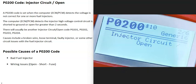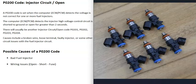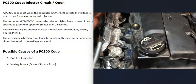Today I'm talking about a P0200 code — what it is and how you can go about fixing it. A P0200 code is an injector circuit open. Basically, each cylinder on the engine has a fuel injector controlled by the computer to inject fuel, but when you get this P0200 code the computer is seeing some kind of problem inside the injector circuit, which is the wires the computer uses to control the injectors.